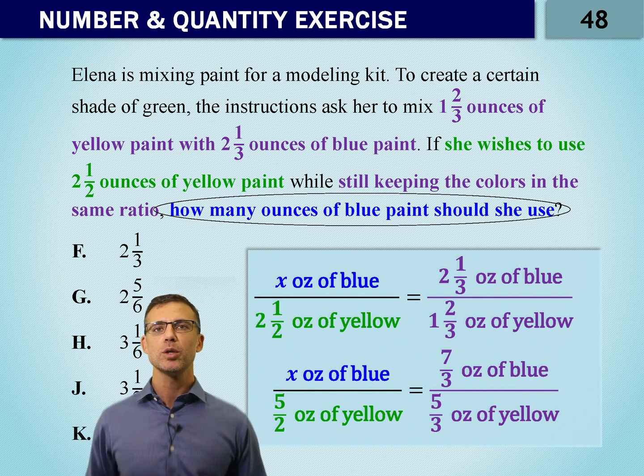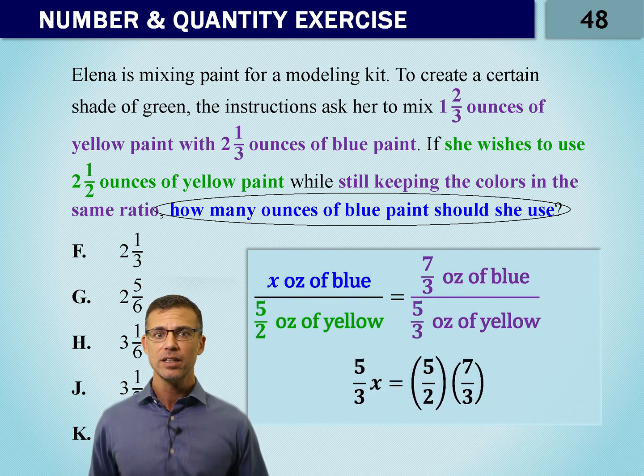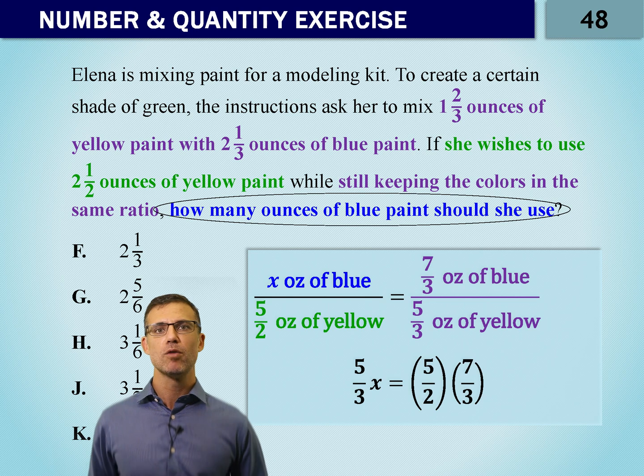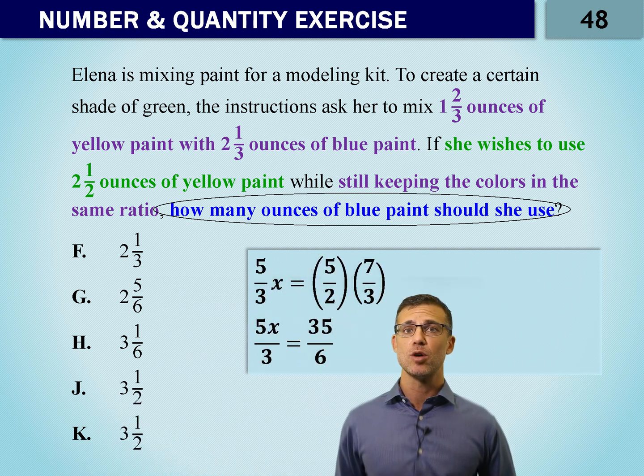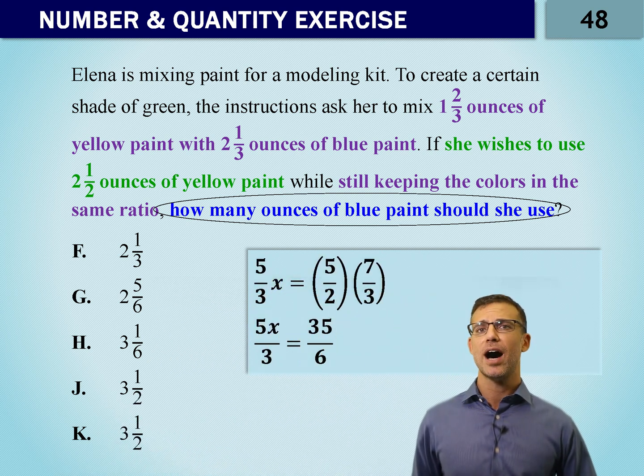Now what we can do is multiply all these pieces together and we've got five-thirds X equals five over two times seven over three. We combine that one step further. We've got five X over three equals thirty-five over six.